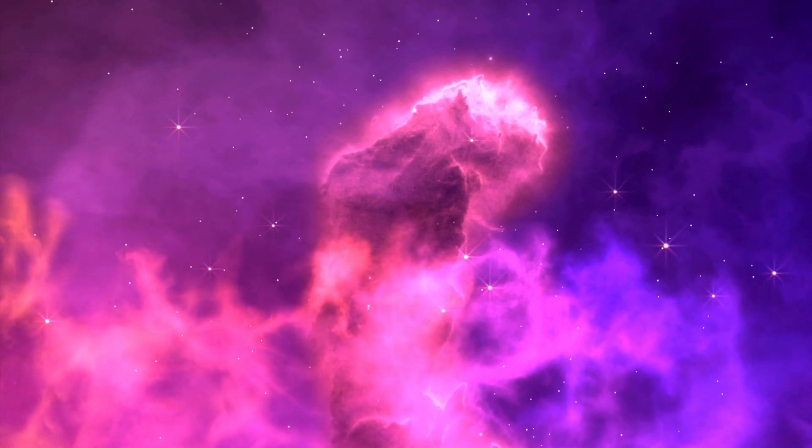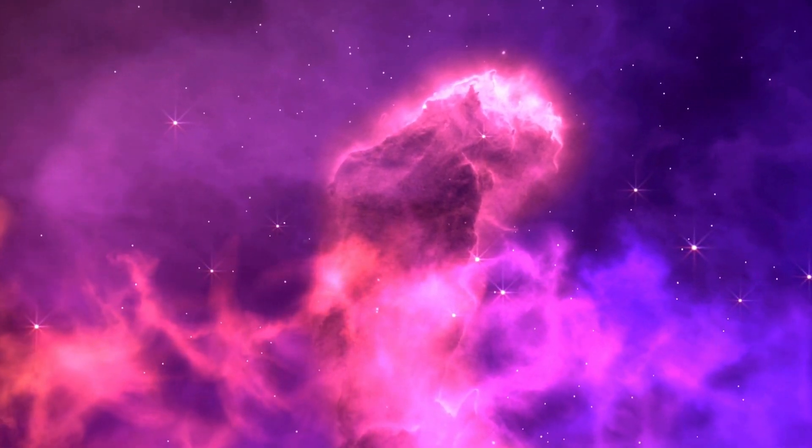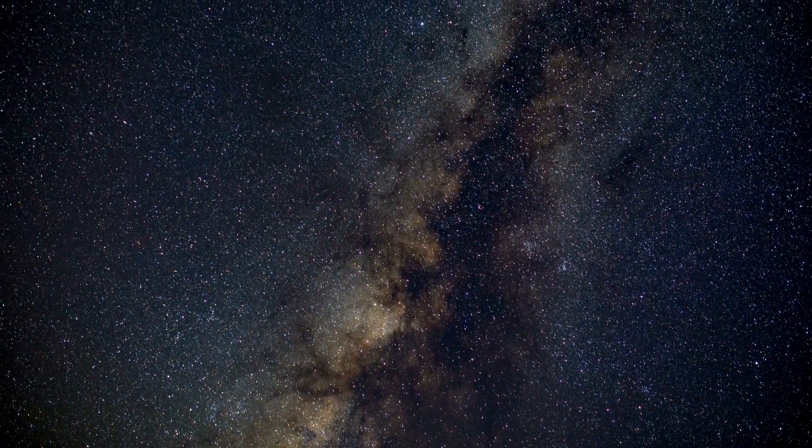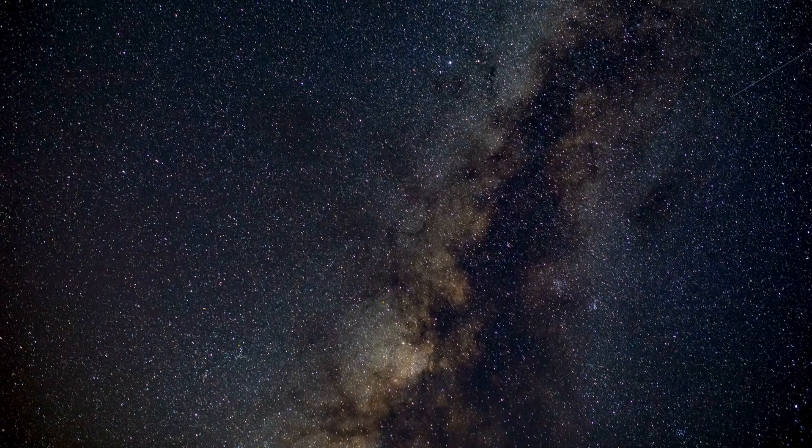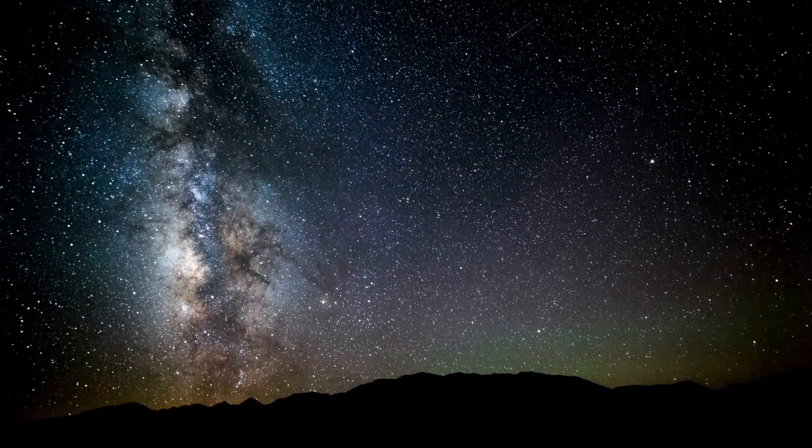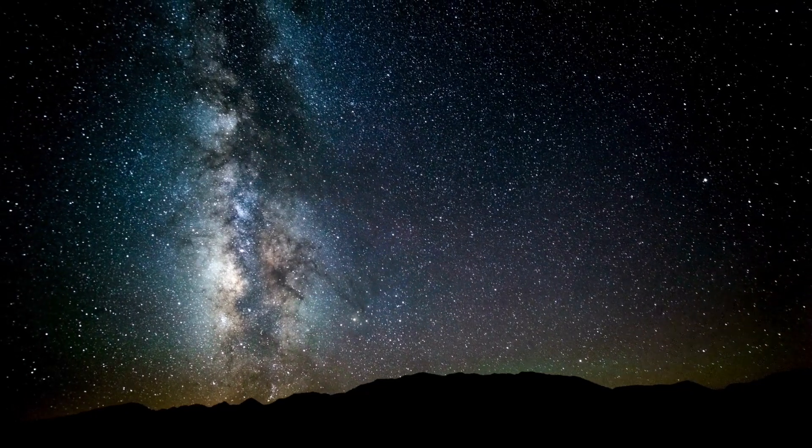Furthermore, we shouldn't forget about terrestrial exoplanets, those that resemble our own Earth. These planets come in various sizes, from smaller than Earth to twice its size. There are also super-Earths, which have masses greater than twice that of our planet yet are lighter than Neptune.